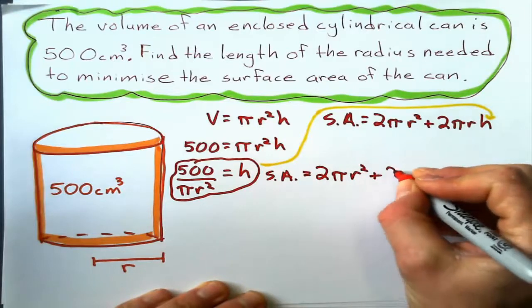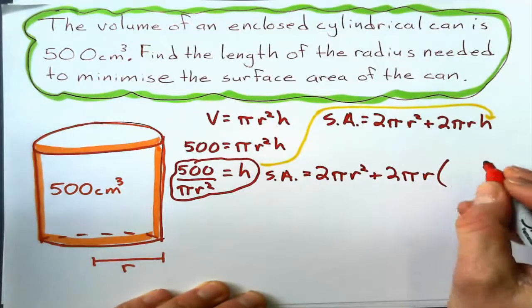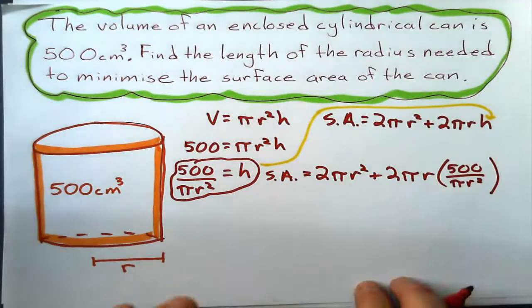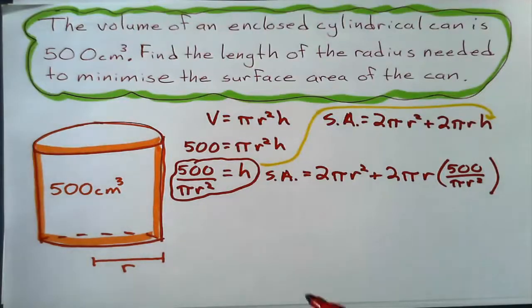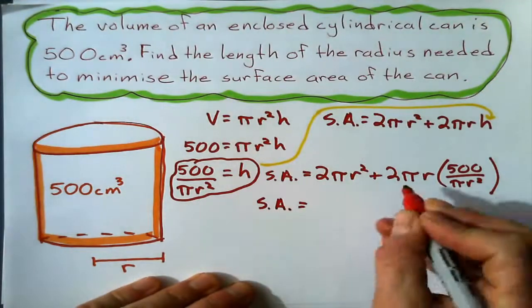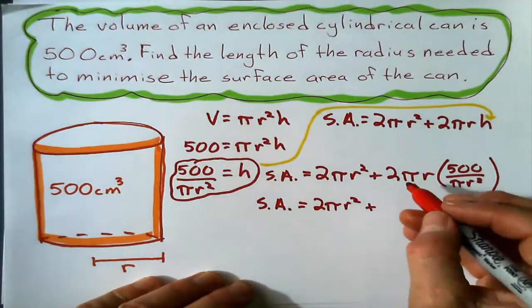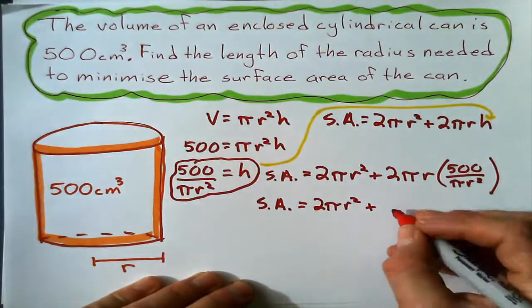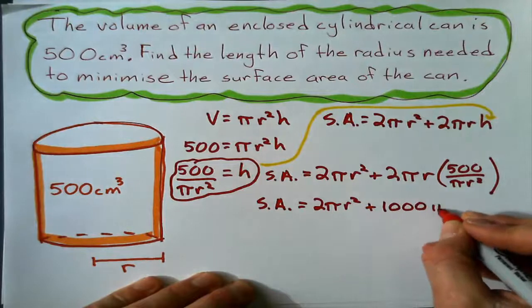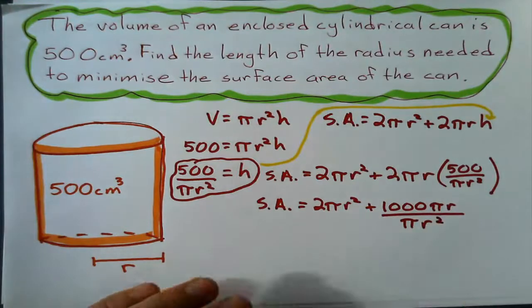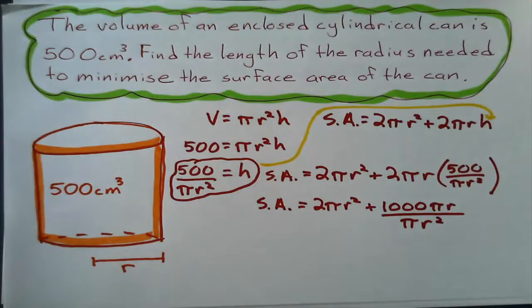2 pi r squared plus 2 pi r times 500 over pi r squared. Now, I think I will simplify this bit. 2 pi r squared plus, this really is like over 1, this 2 pi r. So on the top here, I get 1000 pi r over pi r squared. And what happens as we get some cross-cancelling going on? Well, the pi's cancel out, and 1 r is going to cancel out.